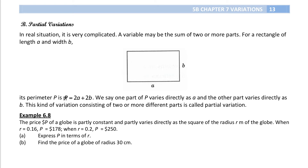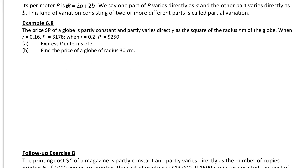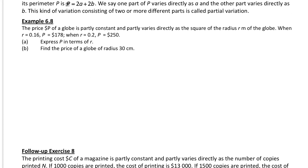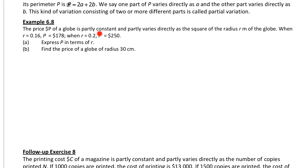Example 6.8. The price P of a ring is partly constant and partly varies directly as the square of the radius. That means the price of the ring depends on two parts. The first part is a constant. The second part varies directly as the square of the radius r. We are asked to find and express P in terms of r.